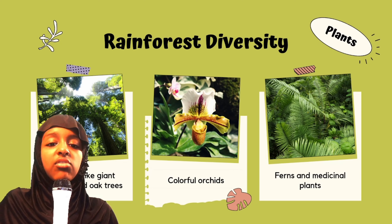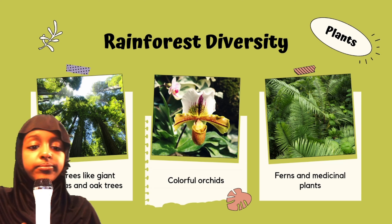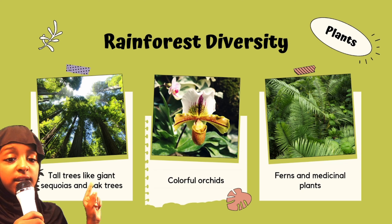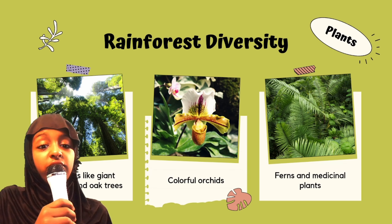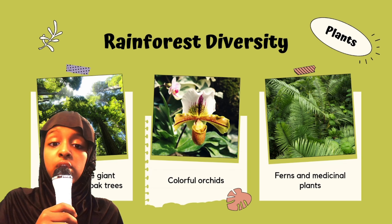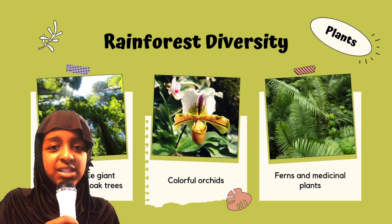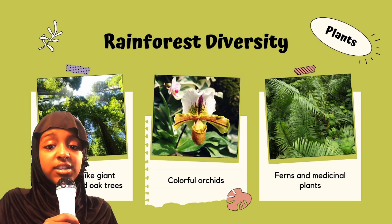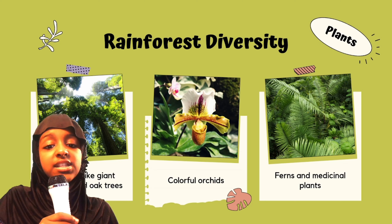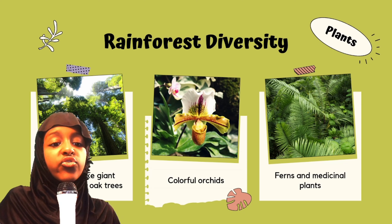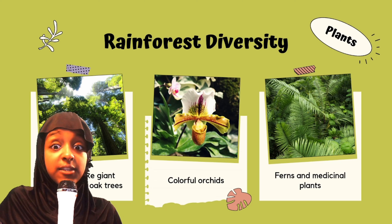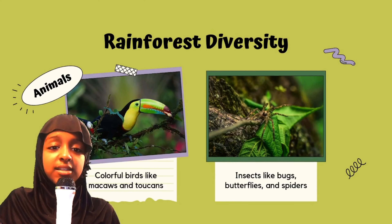Next, we're going to be talking about rainforest diversity. Tall trees like giant sequoias and oak trees are in the rainforest. You can also find colorful orchids, which is a type of flower. You can also see ferns and medicinal plants, which are plants used for medicine all around the world. So it's very important for us.